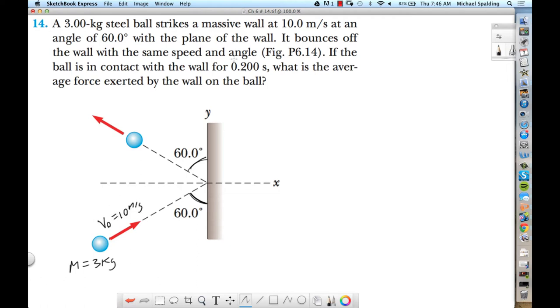So this initial velocity is 10, and then it bounces off the wall with the same speed. All right, so V final is also 10 meter per second. So the question is, if the ball is in contact with the wall for 0.2 seconds, what is the average force exerted by the wall on the ball?